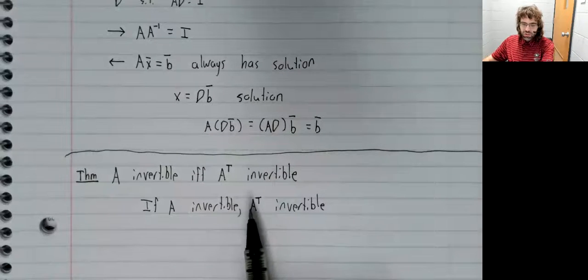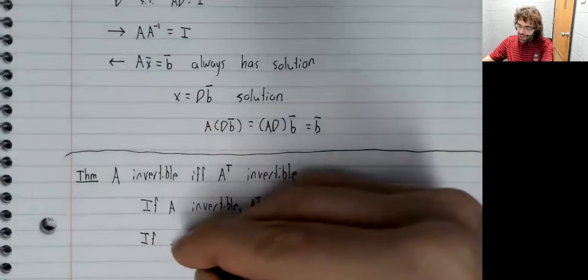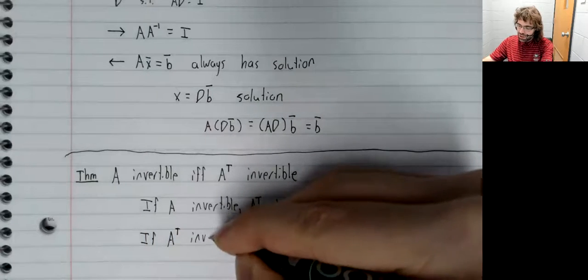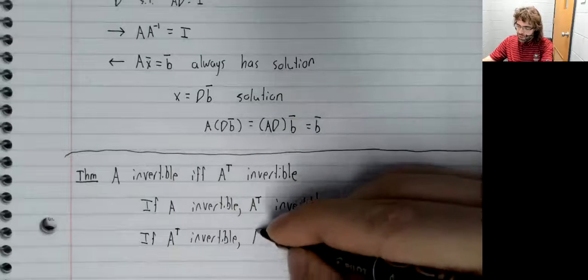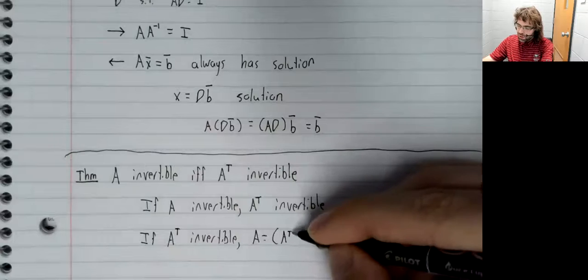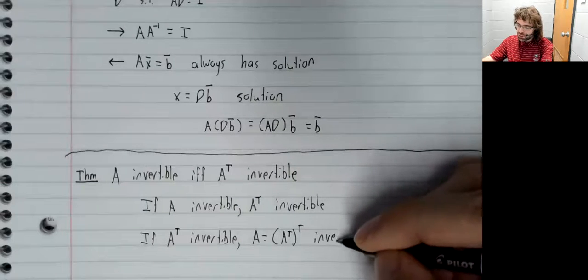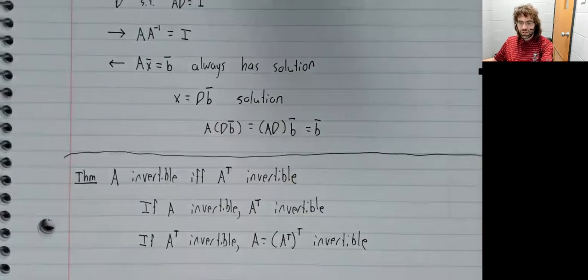And this direction tells us that if A transpose is invertible, then A, which is the transpose of the transpose, A transpose is invertible.